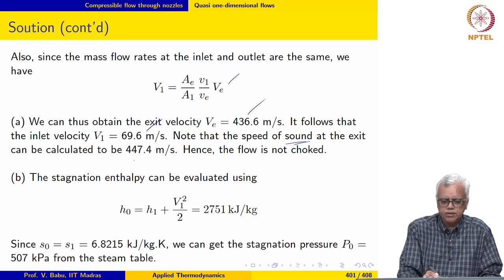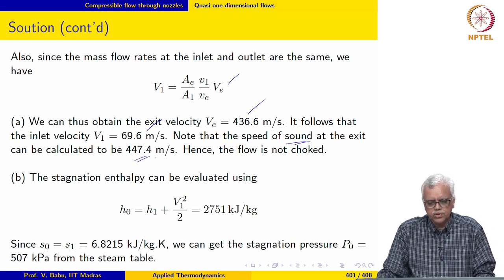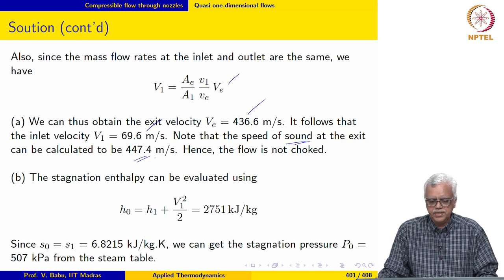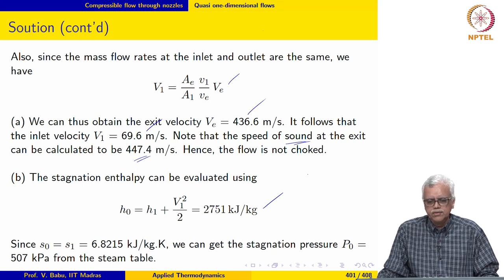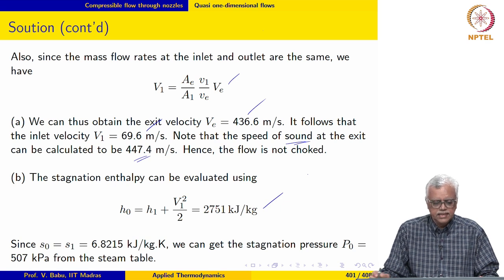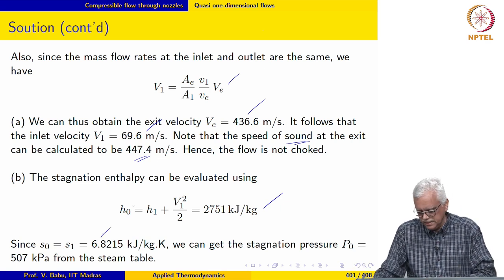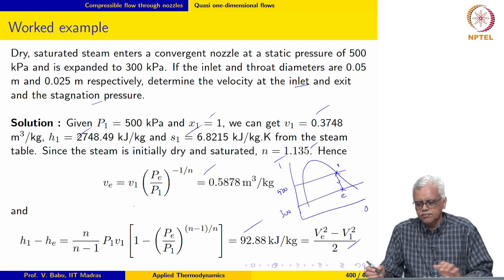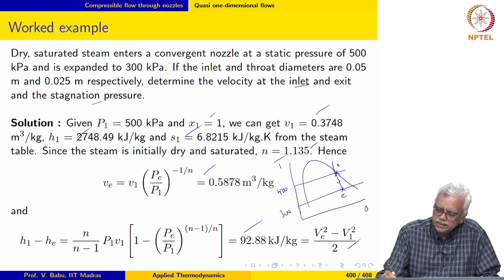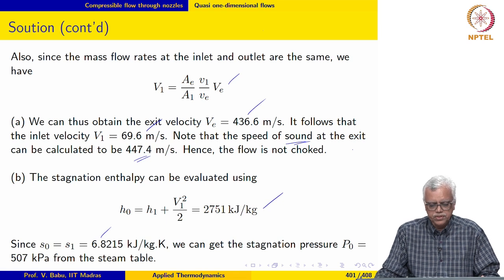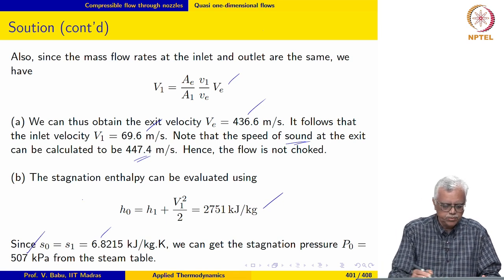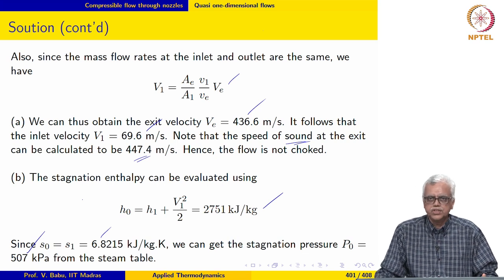The speed of sound at the exit is evaluated as √(n × pₑ × vₑ) = 447.4 m/s. Since the inlet velocity is known and the inlet specific enthalpy is also known, the stagnation enthalpy h₀ may be evaluated. S₀ is also known because the stagnation process is isentropic. With S₀ and H₀ known, the stagnation pressure is found to be 507 kPa from the steam table.